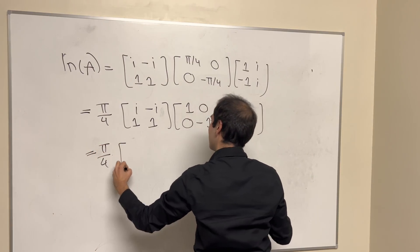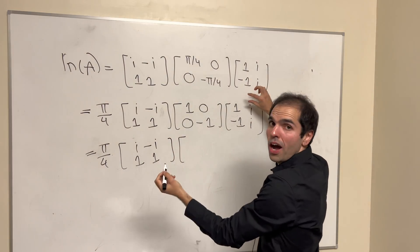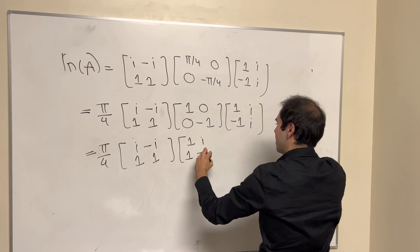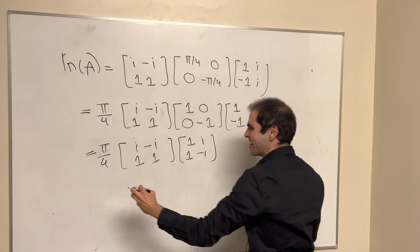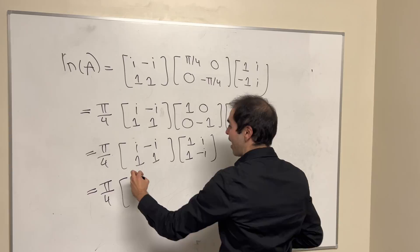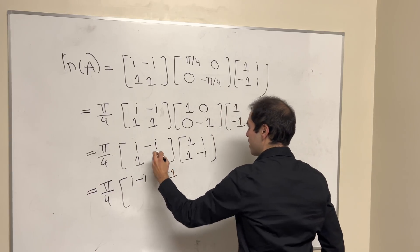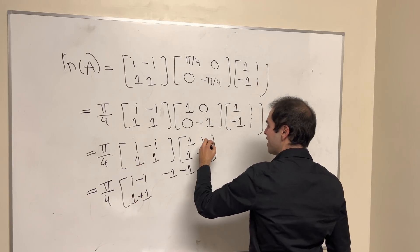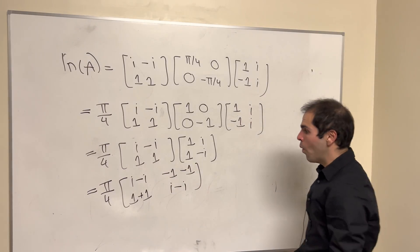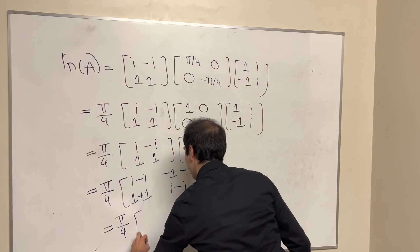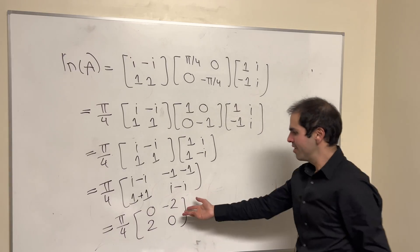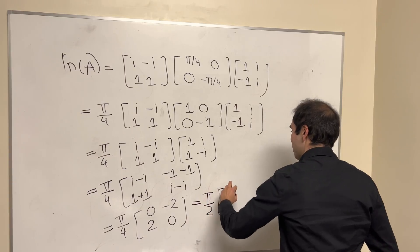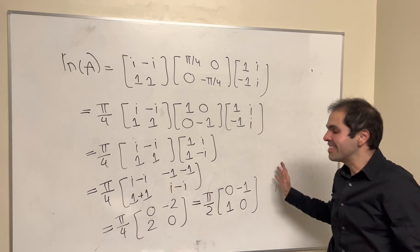So we get π/4 times [[i, −i], [1, 1]] times [[1, −i], [1, i]] — nothing happens with the 1, but entries get multiplied by −1. Carrying out the multiplication: the top-left is i−i = 0, top-right is −1+1 = −2... wait: 0, −2; 2, 0. Factoring out 2, in the end you get π/2 times [[0, −1], [1, 0]]. And this is ln of rotation.